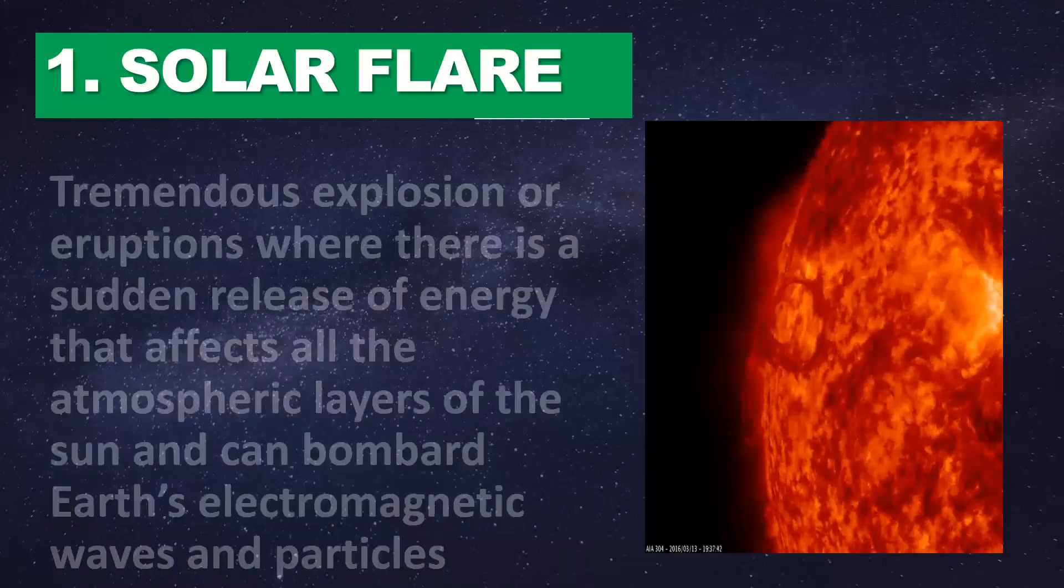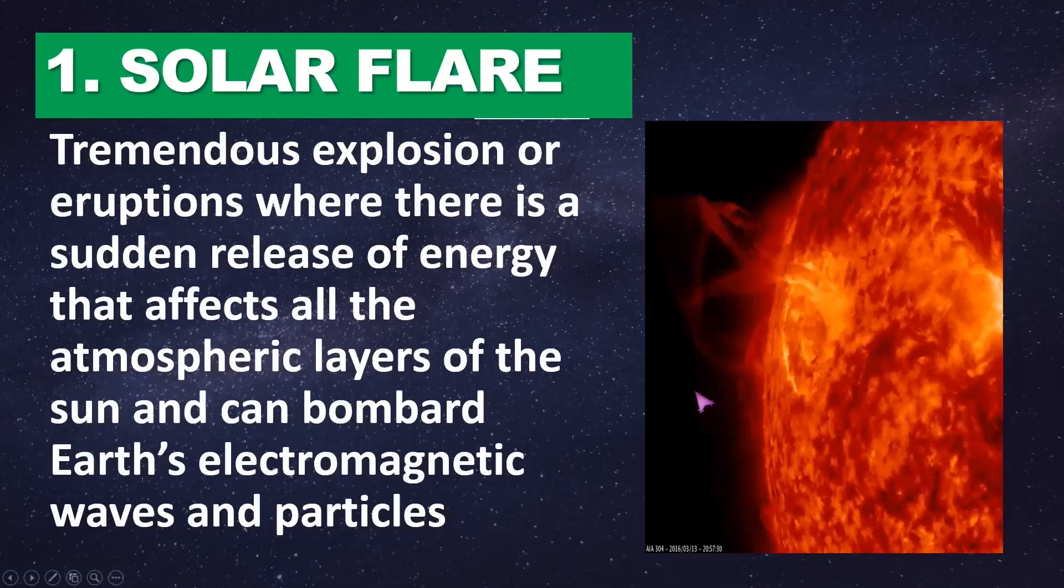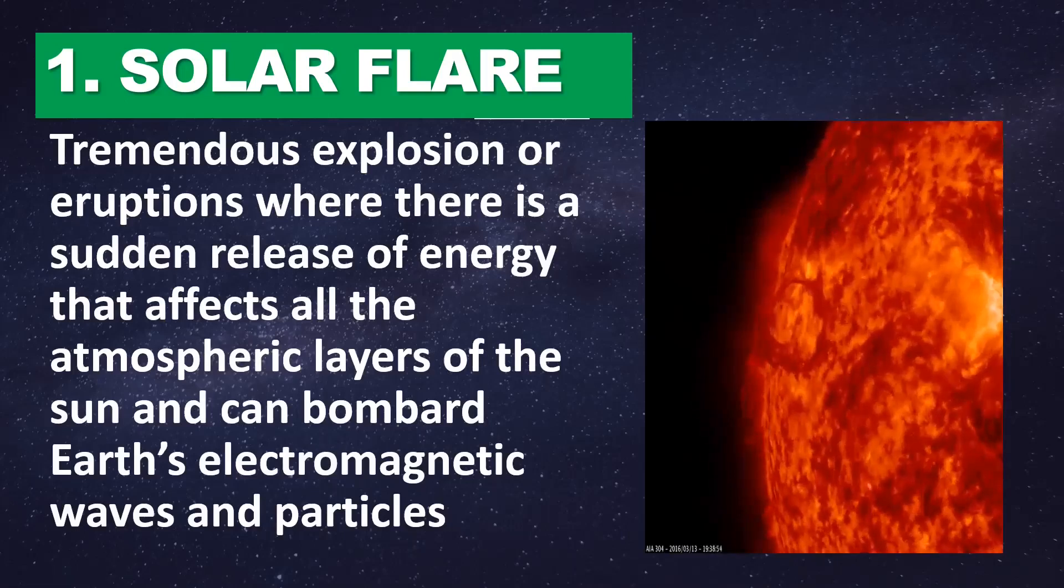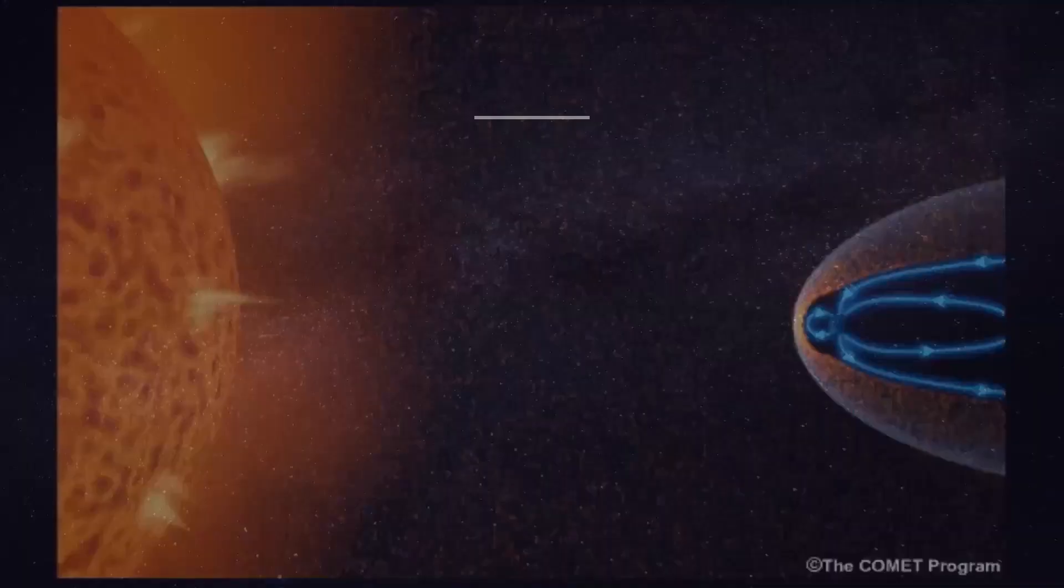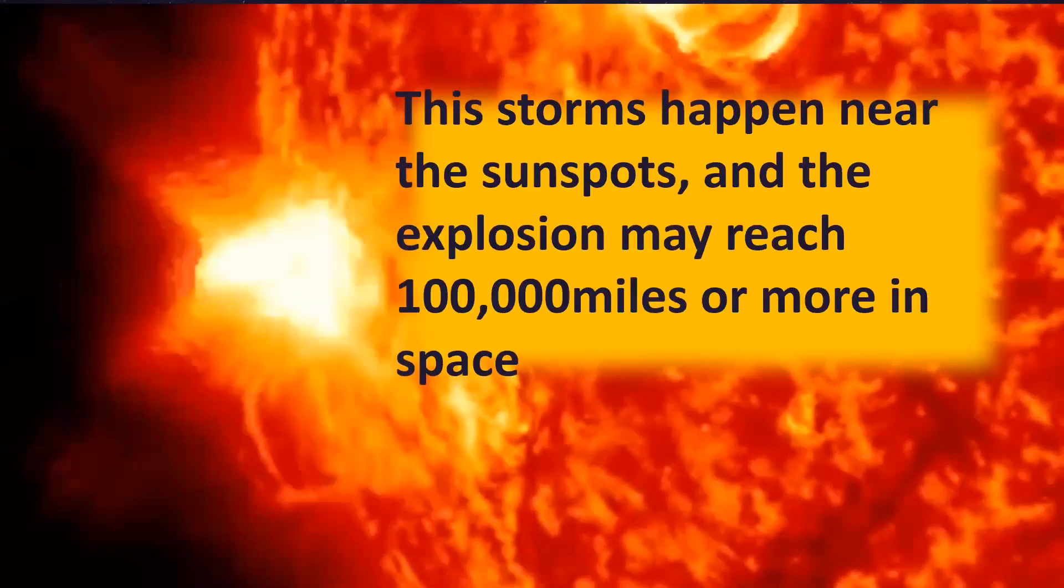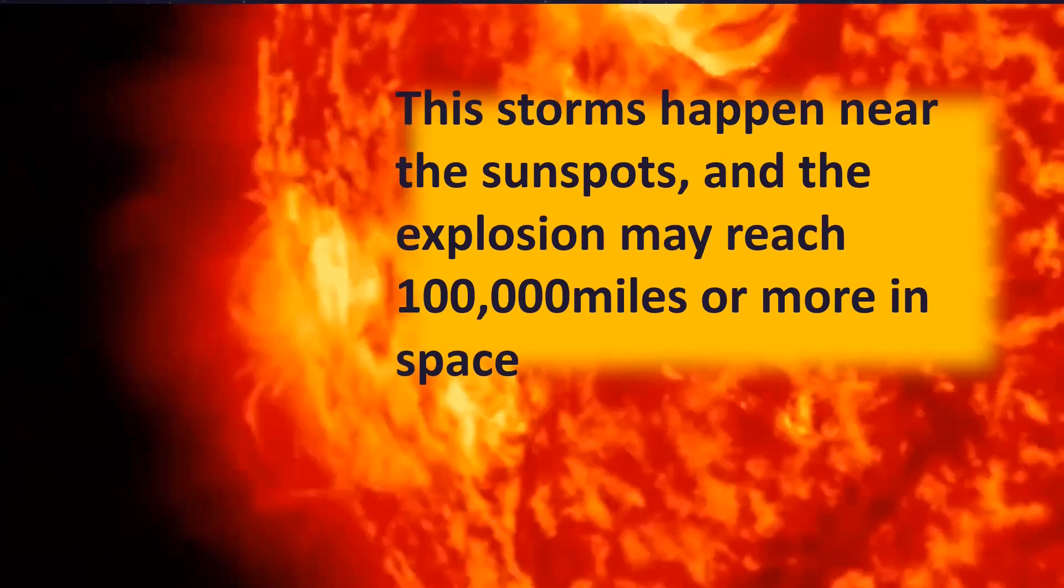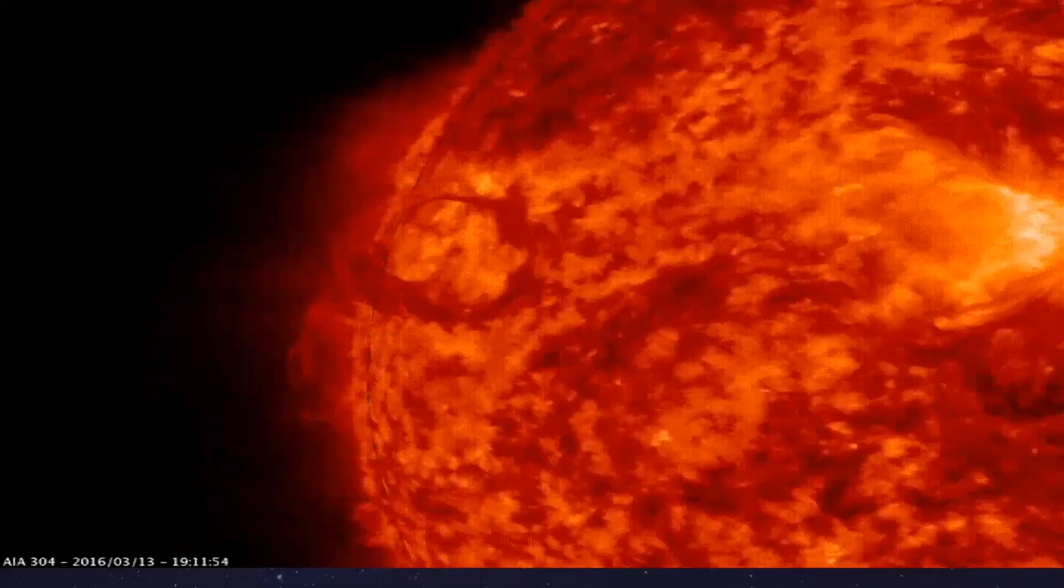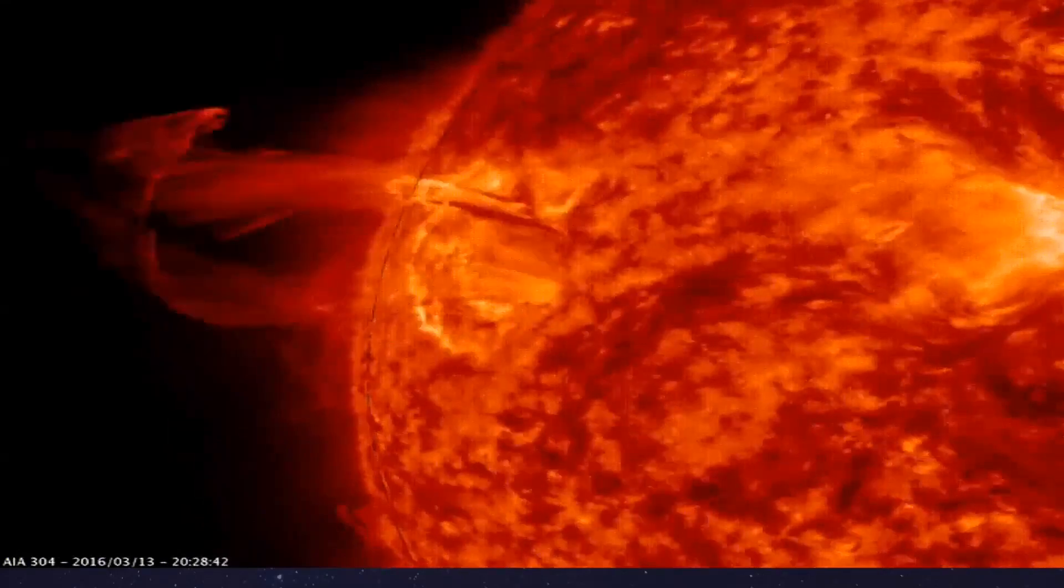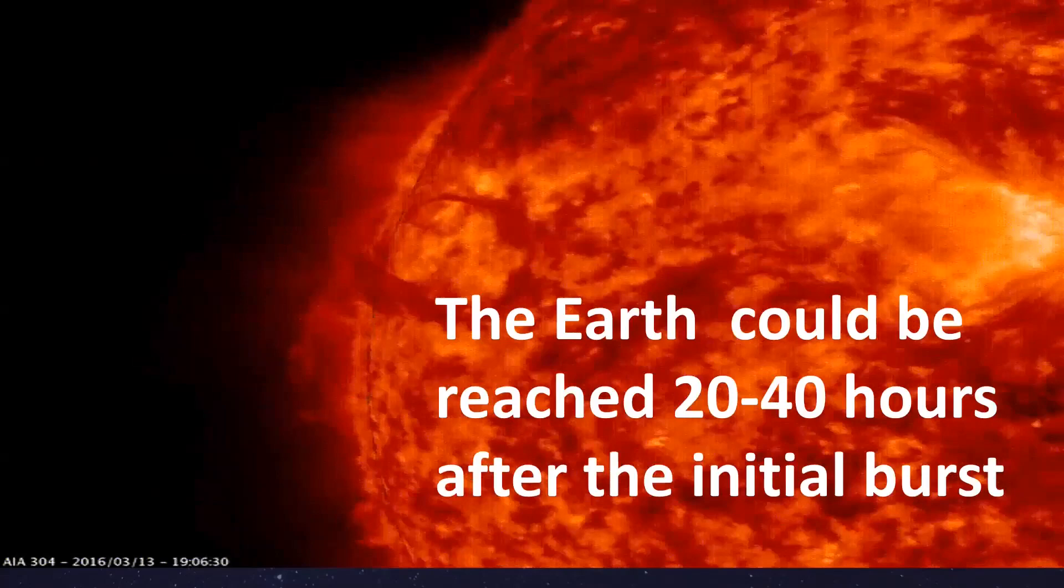It is composed of the following: Solar flares - a tremendous explosion or eruption where there is a sudden release of energy that affects all atmospheric layers of the sun and can bombard Earth with electromagnetic waves and particles. These storms happen near the sunspots, and the explosion may reach 100,000 miles or more in space. Earth could be reached 20 to 40 hours after the initial burst.